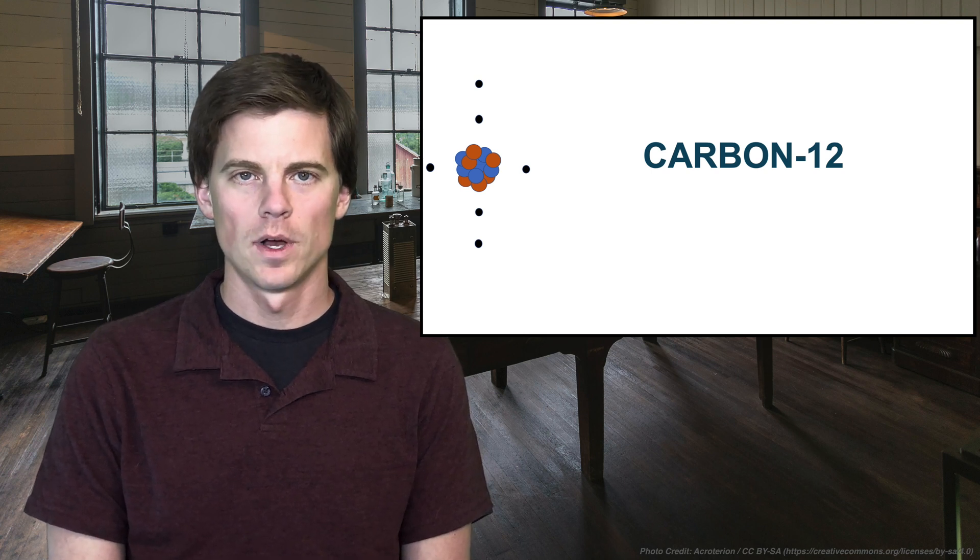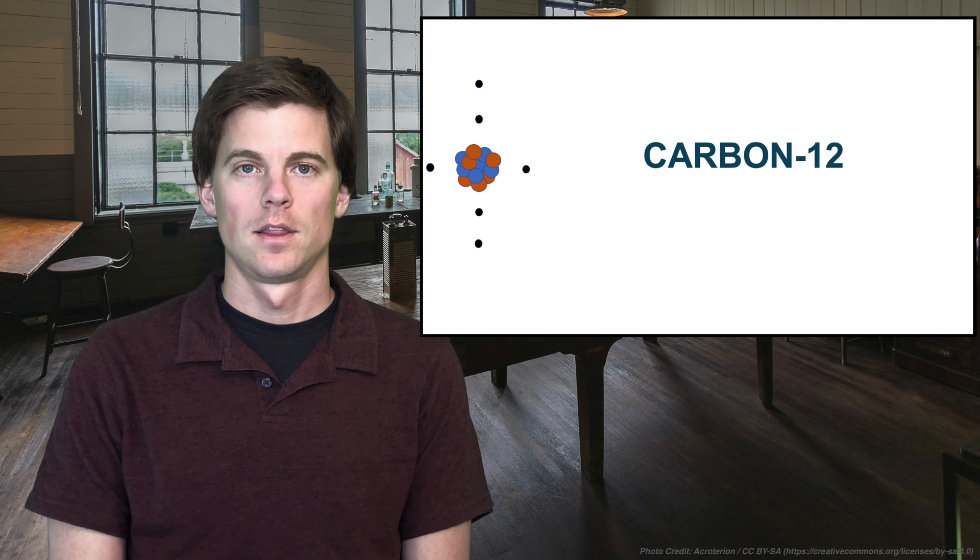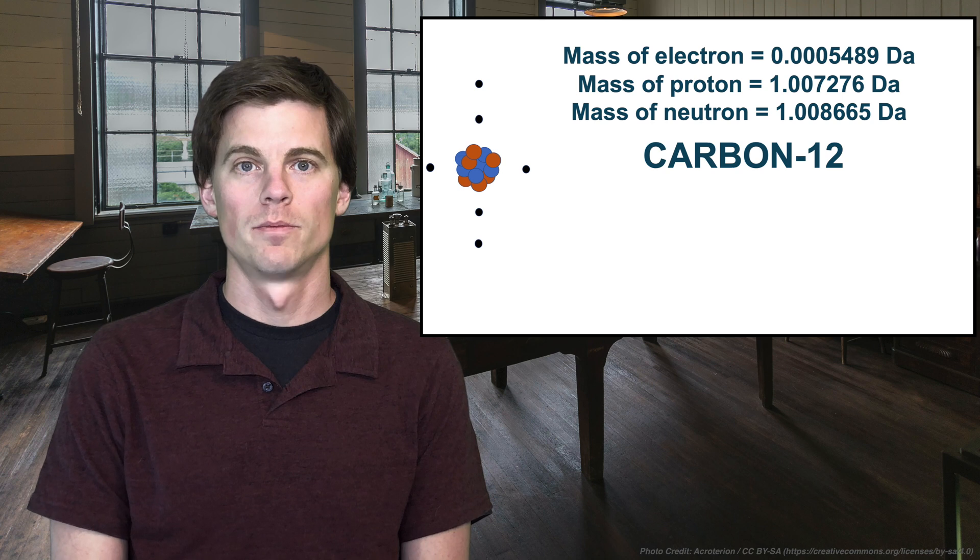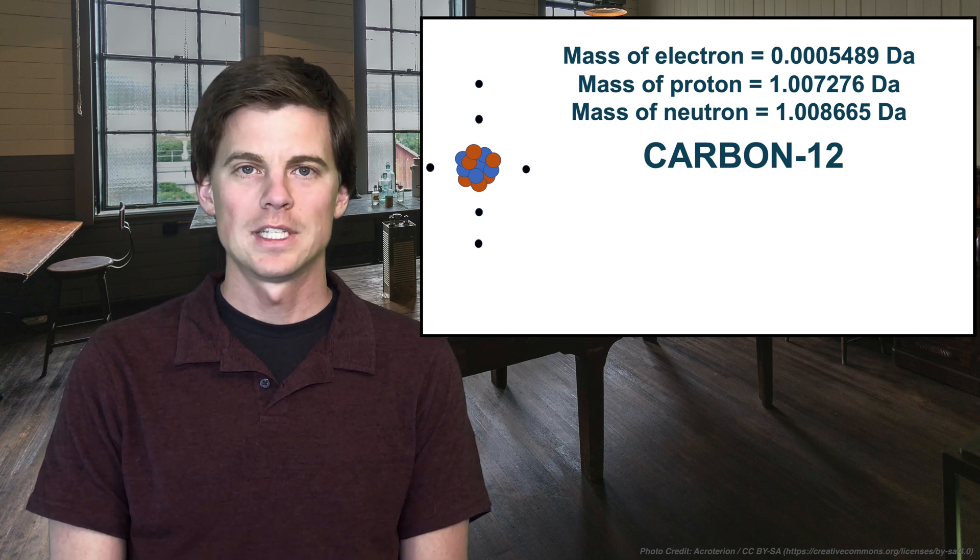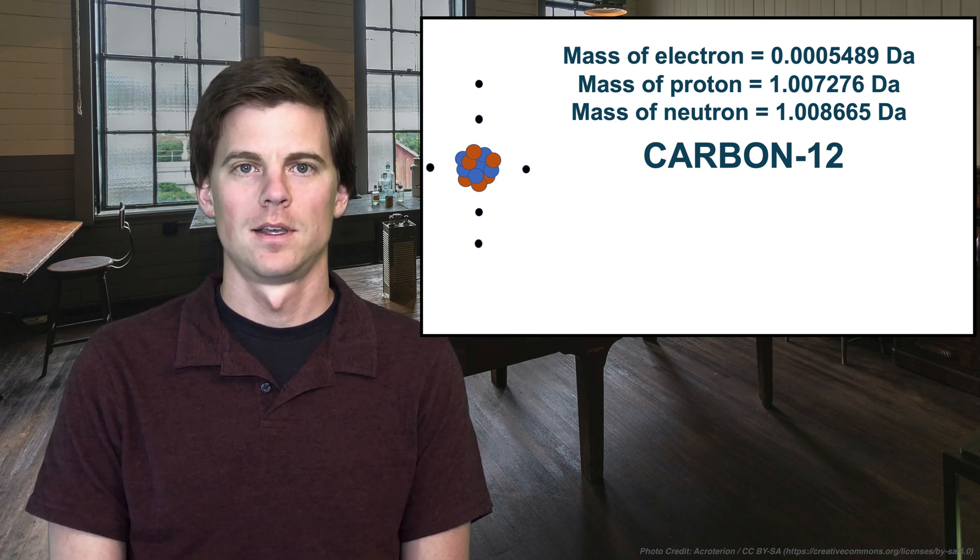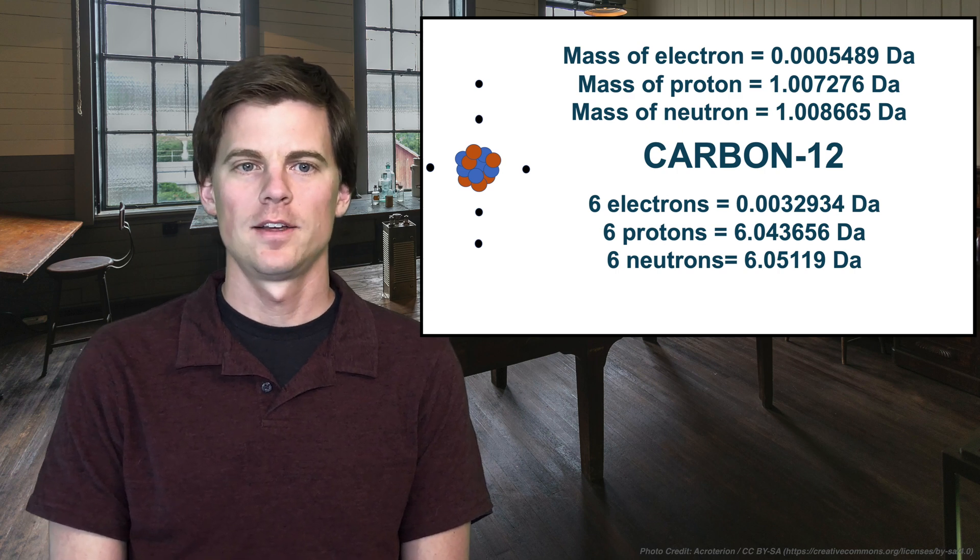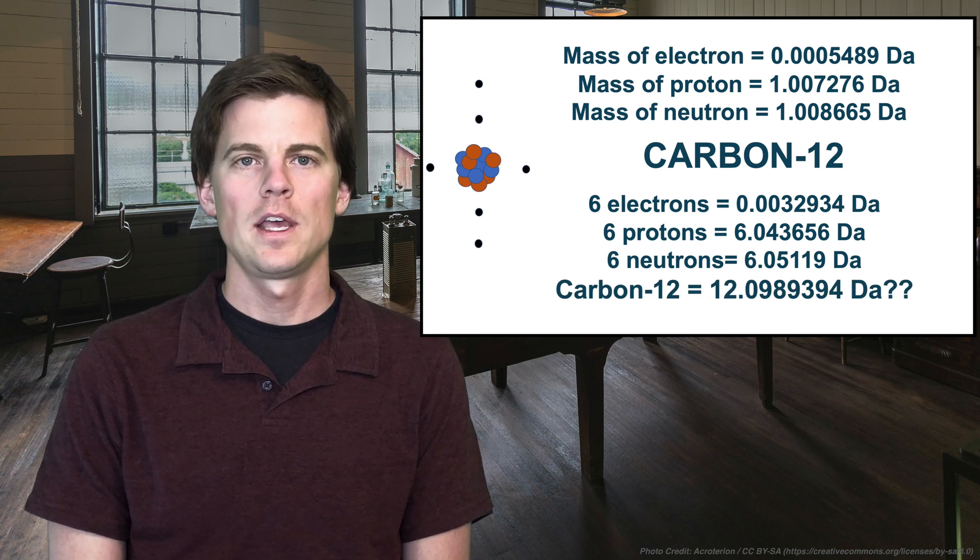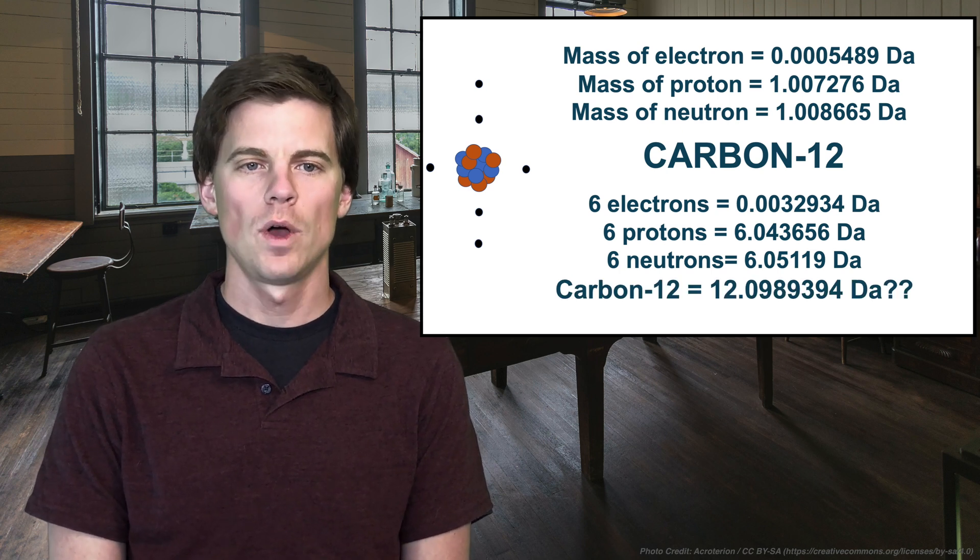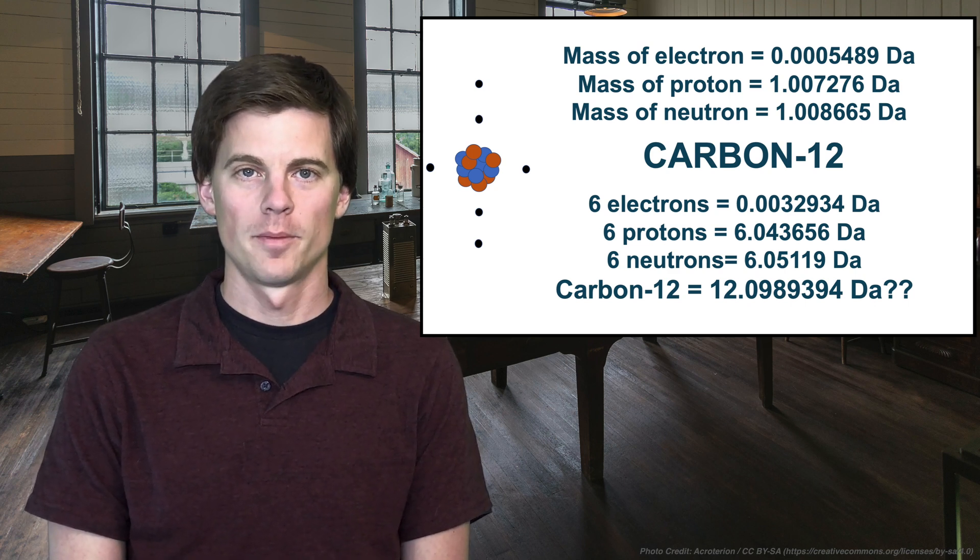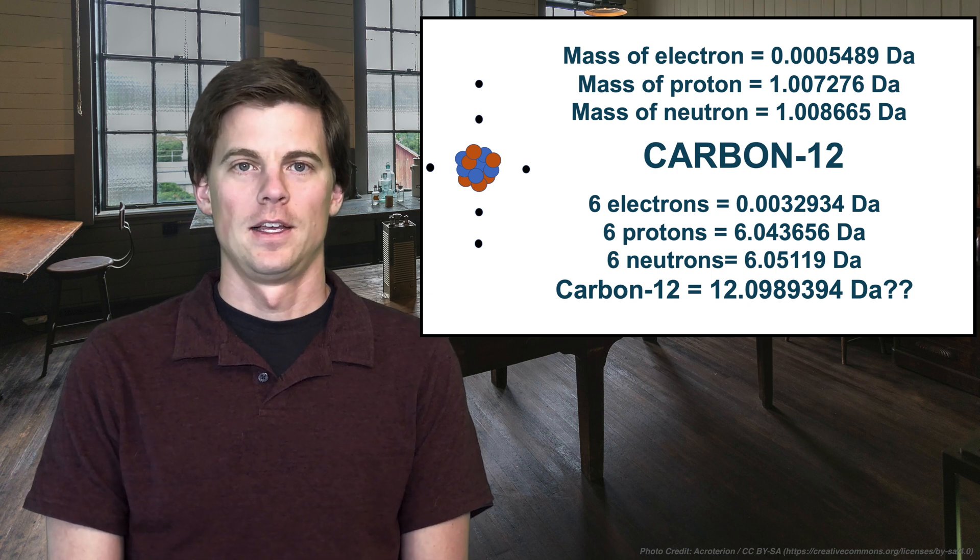And so the mass of carbon-12 should be theoretically the weight. So the mass of all those electrons, plus the mass of all the neutrons, plus the mass of all the protons. So if we take those individual masses and we start to add them up, what we get is 6.05, 6.04, 0.003. We add them together, and we came up with carbon-12 weighing 12.098939 Daltons. The sum of all its parts, right? Matter cannot be created nor destroyed. So is that correct?